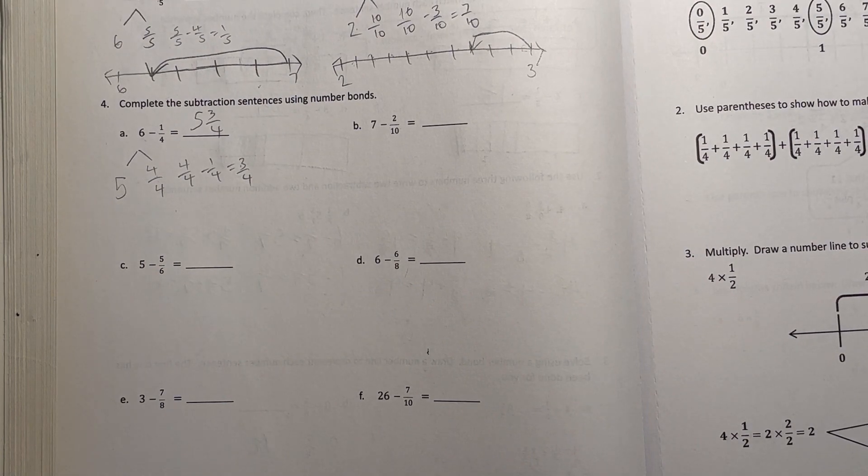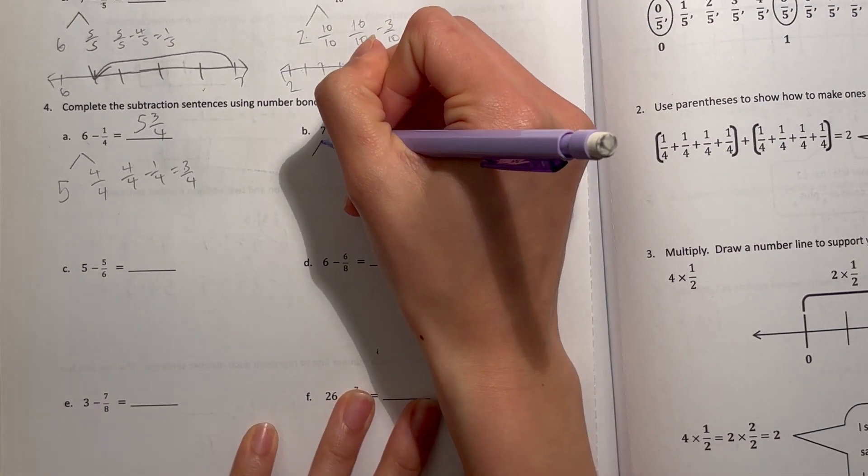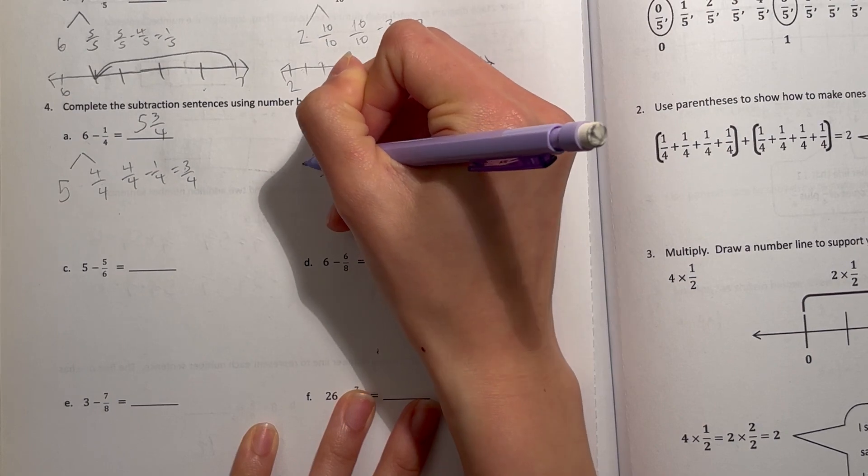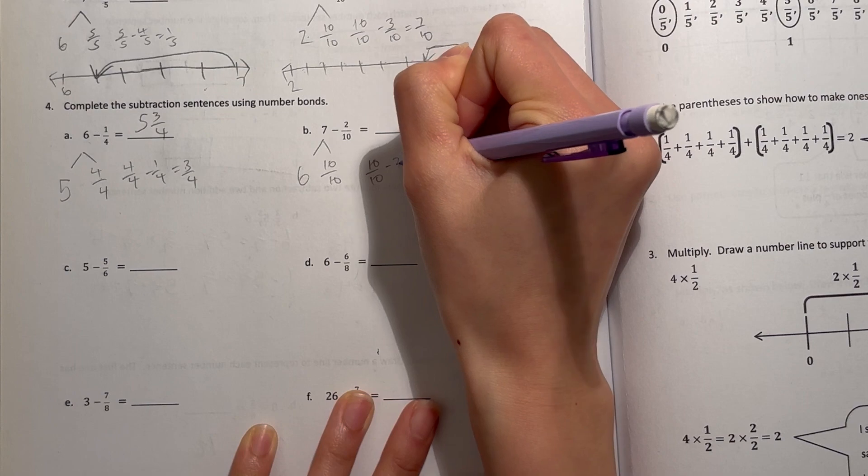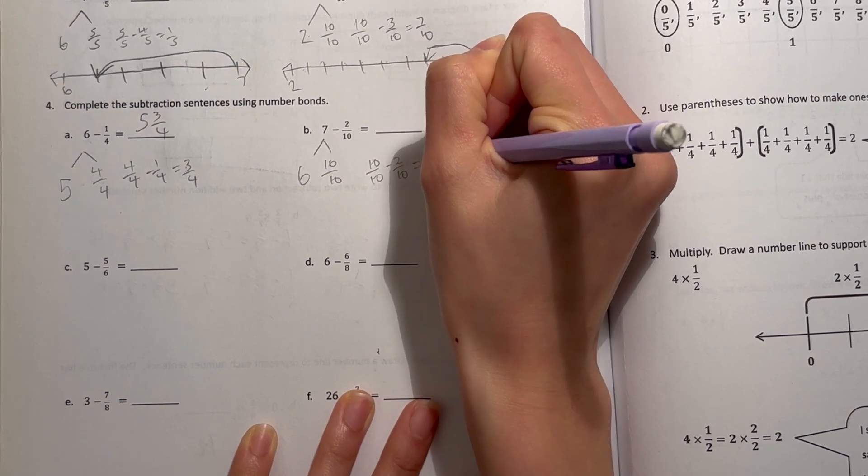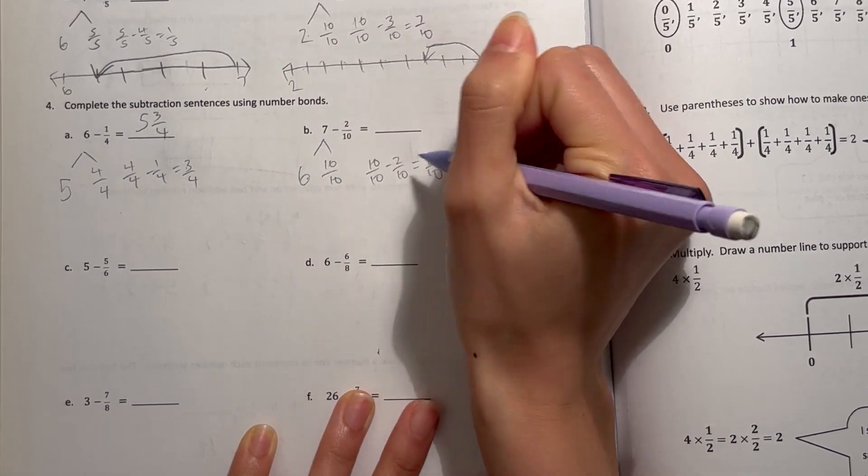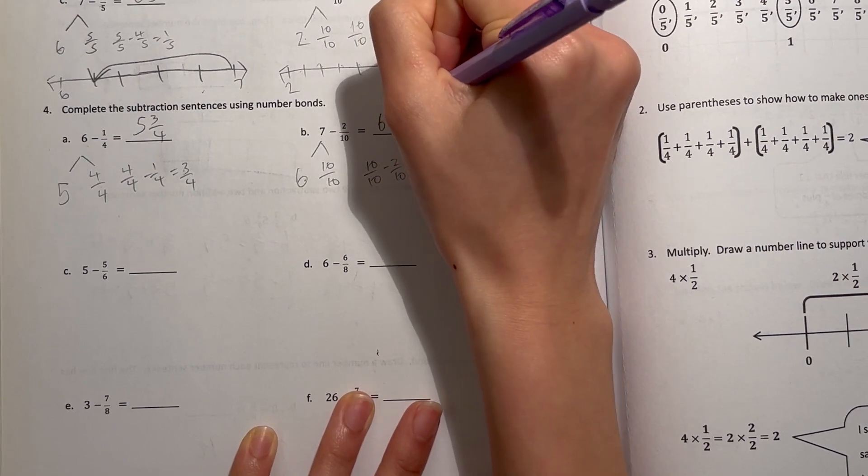All right, now B, 7 minus 2 tenths, take out 10 tenths, gives me 6 left. 10 tenths minus 2 tenths equals 8 tenths. So that's 6 plus 8 tenths, which is 6 and 8 tenths.